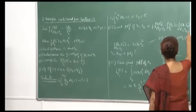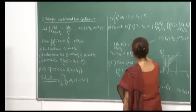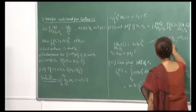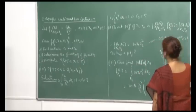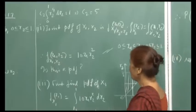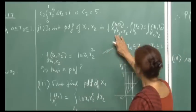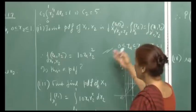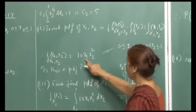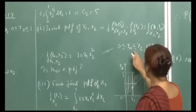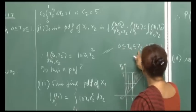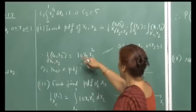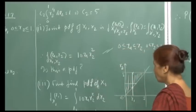The joint PDF of x1 and x2 is 10·x1·x2², where x1 ranges from 0 to x2 and x2 varies from 0 to 1. This is a PDF because it is a product of two verified PDFs. There is no need to verify this again, though if you want you can integrate with respect to x1 from here to here and for x2 from 0 to 1, and the double integral will come out equal to 1.